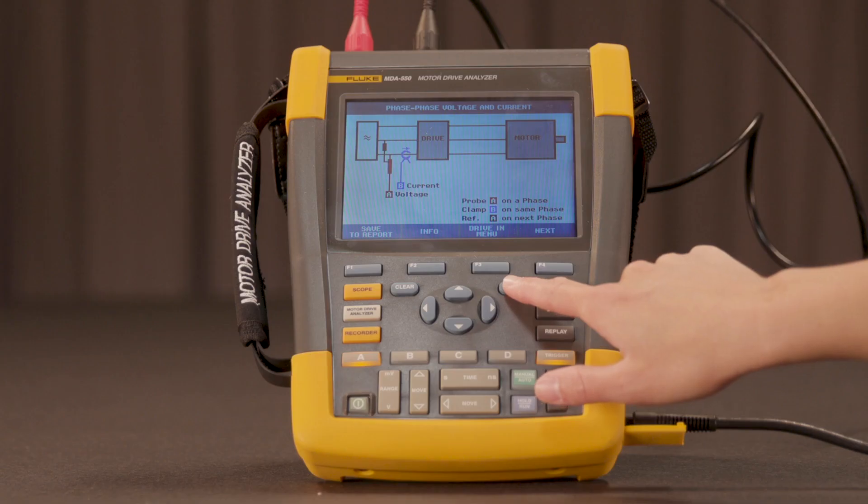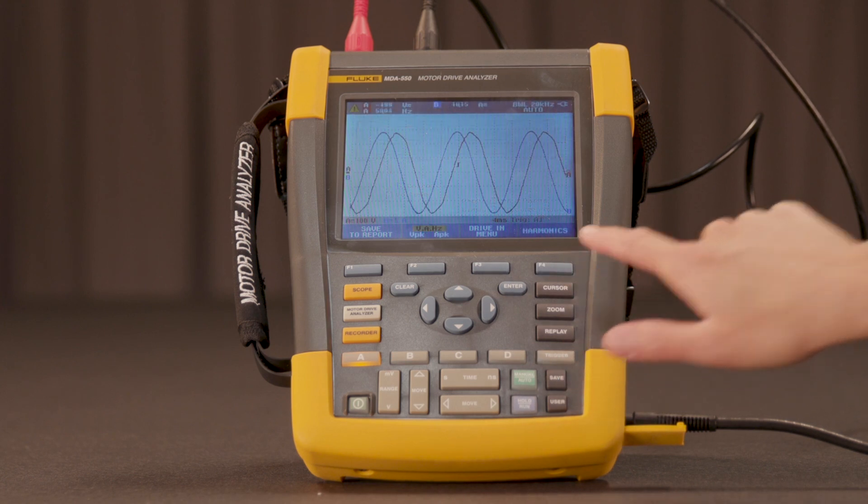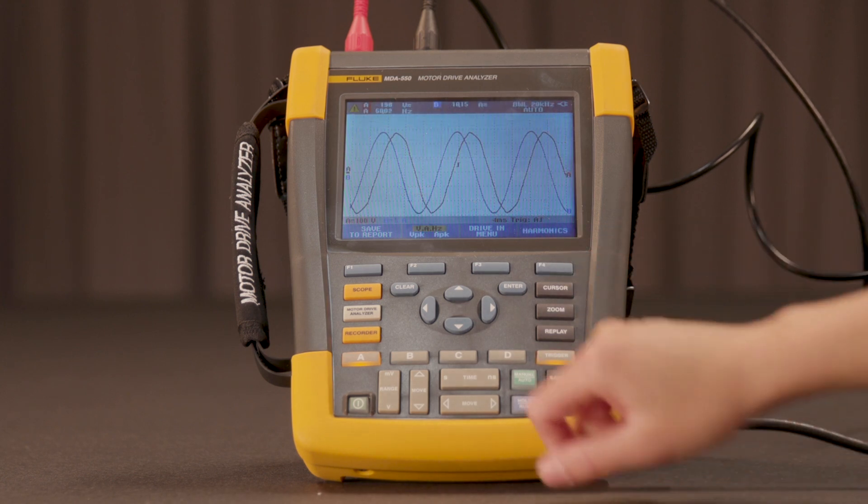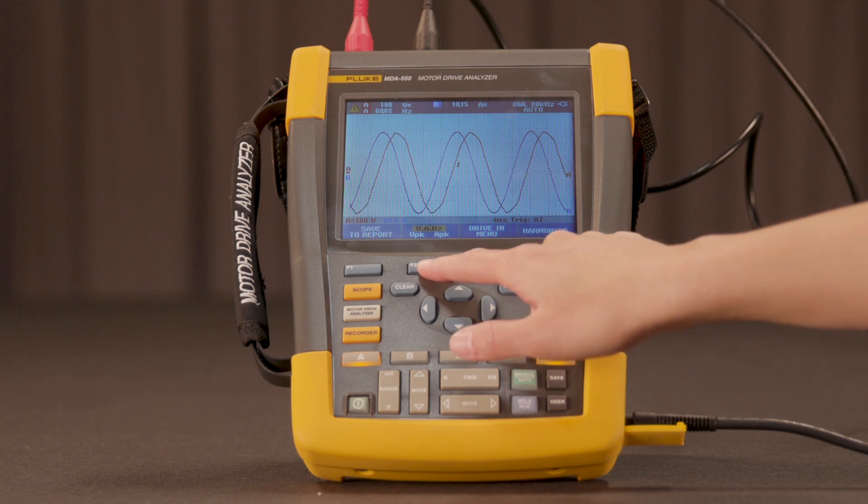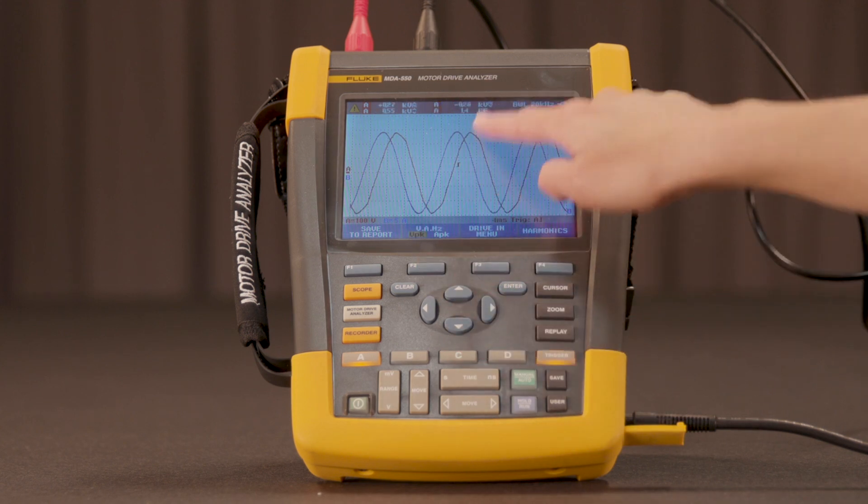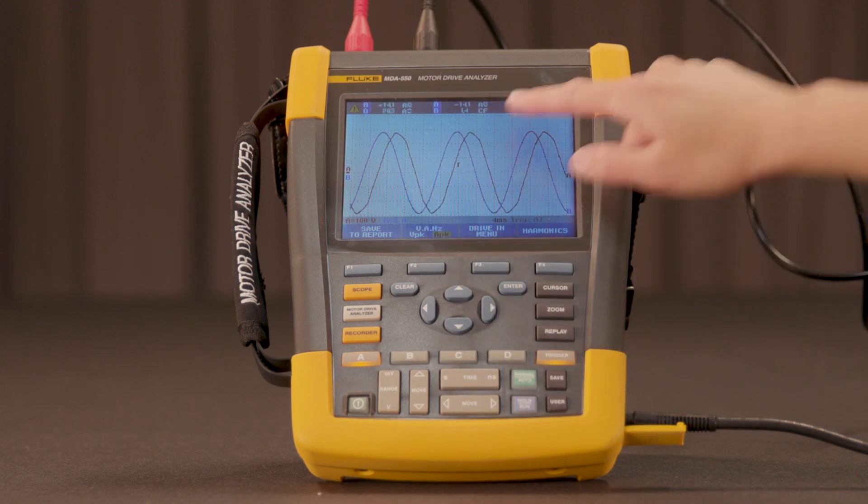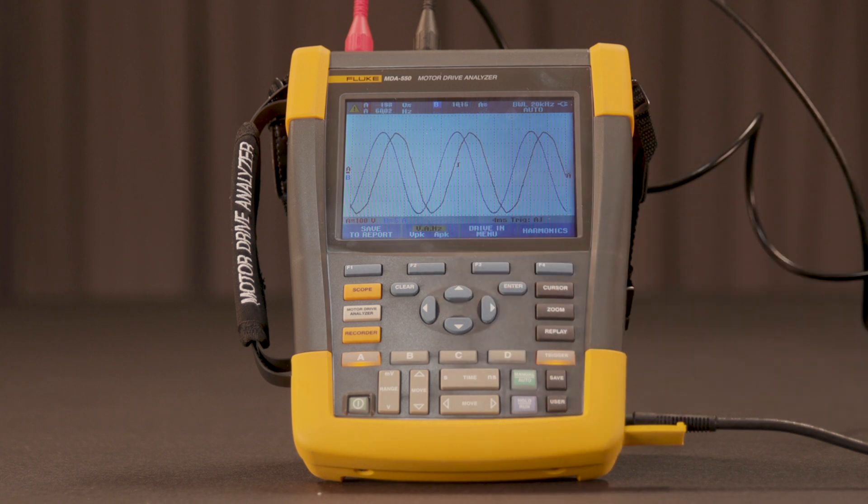Once the signals are on screen, digital readings are shown. In most cases, subsidiary measurements are available by pressing function F2 key. You can even bring on measuring cursors for detailed analysis of the signal.